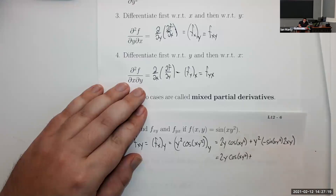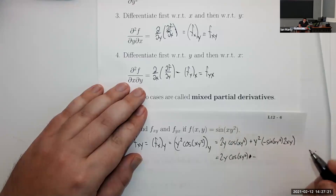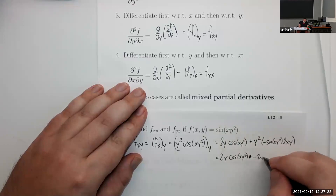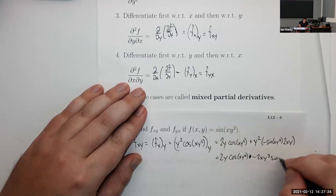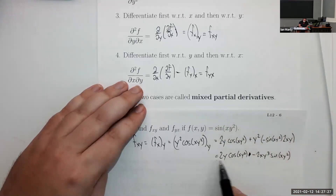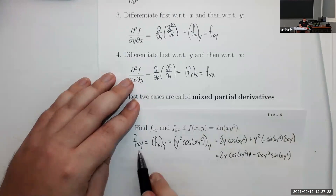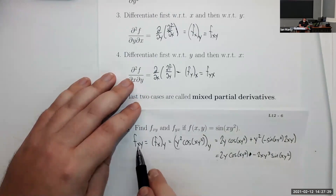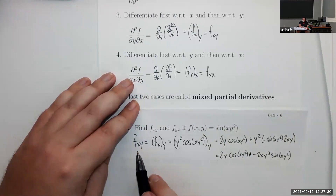Simplifying: fxy = 2y·cos(xy²) − 2xy³·sin(xy²). This is our mixed partial — we did an x-derivative then a y-derivative.